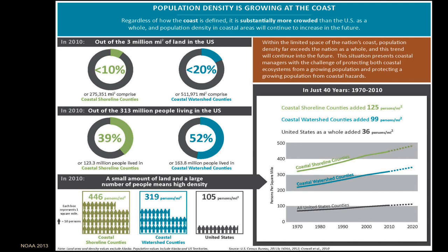Our population is increasing at the coast, and it's also increasing at a greater rate than other areas. The slopes are all going up everywhere around the planet — more and more people. But the slopes in the coastal zone are steeper than the slopes in areas outside of the coastal zone.